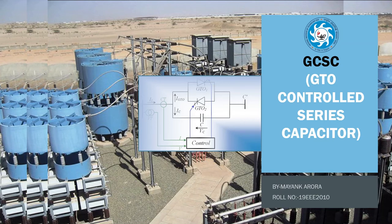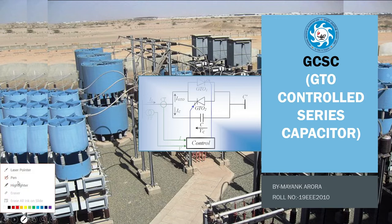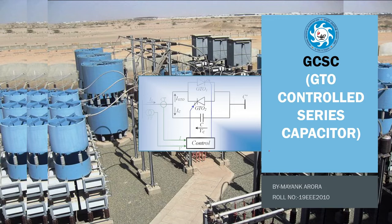In this video, I am going to explain GCSE. What is the meaning of GCSE? GCSE means GTO controlled series capacitor. As the name suggests, it is a series capacitor which is connected with the GTO and we are able to control that GTO. This is my capacitor which is connected in series with the transmission line and that is controlled by GTO.